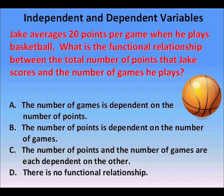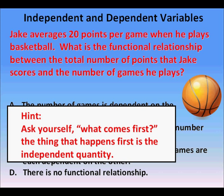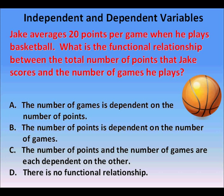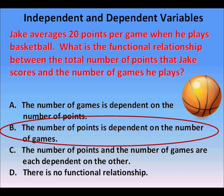Here's another problem. Jake averages 20 points per game when he plays basketball. What is the functional relationship between the total number of points that Jake scores and the number of games he plays, with multiple choices A, B, C, and D to pick from? The first thing we need to figure out is what comes first — the event that comes first is the independent quantity. Do the games come first or do the points come first? When Jake looks at the calendar or schedule for the season ahead, what's scheduled first are the games. So games are the independent quantity, and the number of points scored will depend on the number of games played. We're not going to find out how many points Jake scores until he actually plays the games.